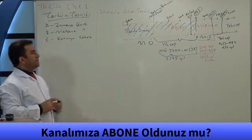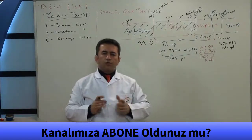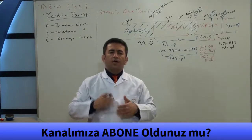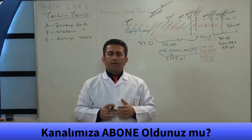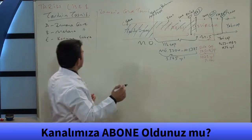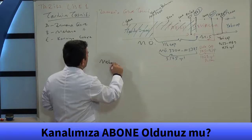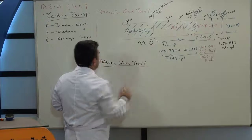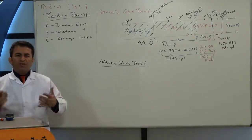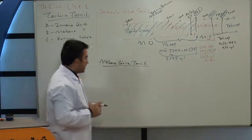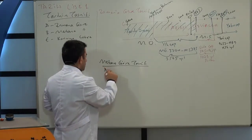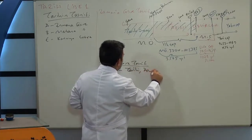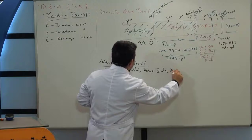Mekâna göre tasnif nedir? Olayın hangi mekânda geçmesine ya da bir bölgenin tarihini inceliyorsak bu mekâna göre tasnife girer. Örneğin Anadolu tarihi, Avrupa tarihi, Asya tarihi gibi.